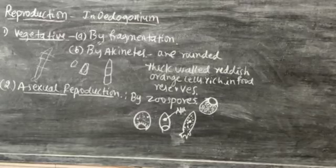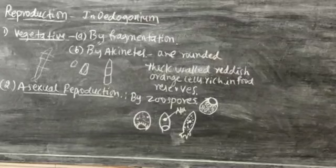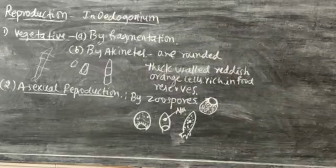Asexual reproduction takes place by the formation of zoospores. Here zoospores are formed by the vegetative cells. They become thick-walled and they produce the motile hairs at the apex. These liberate out from the filament.